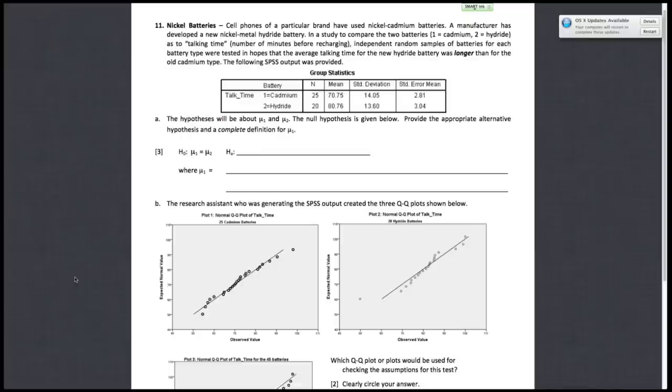The hypothesis will be about mu1 and mu2. The null hypothesis is given below. You can see here, mu1 is equal to mu2. Provide the alternative hypothesis and a complete definition for mu1. So the first thing we should probably do is define what mu1 and mu2 are.